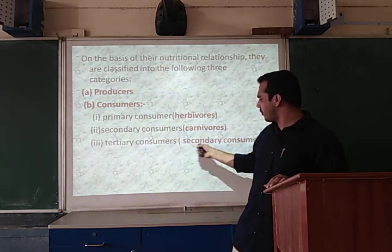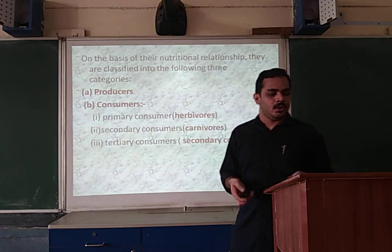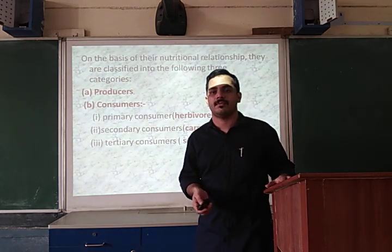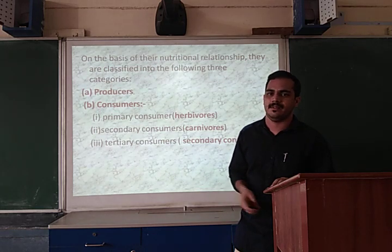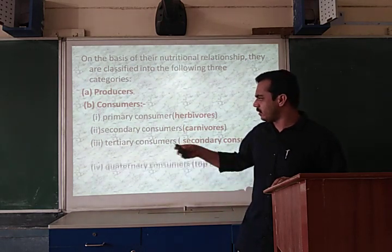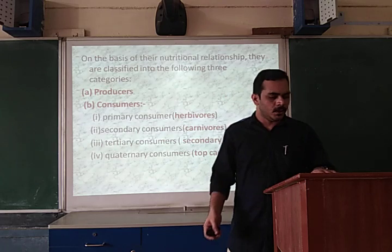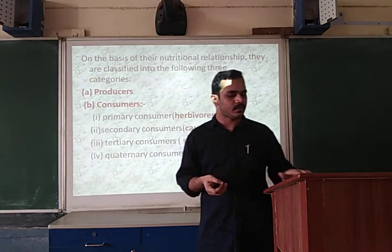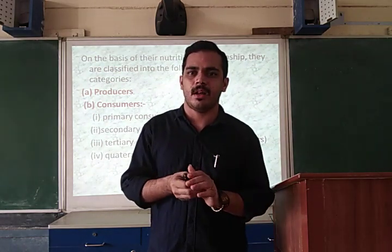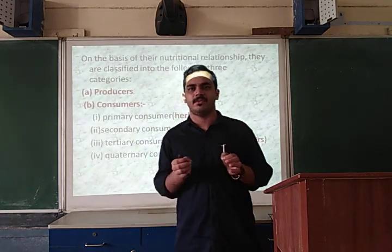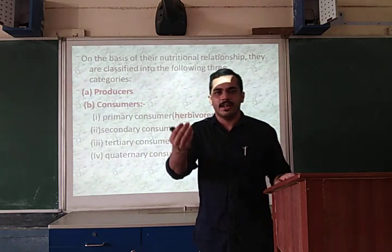The third type is tertiary consumers. Tertiary consumers are those animals which feed on carnivores for their food. The fourth type is called top carnivores. Top carnivores are those animals which are not killed and eaten by any other animal. For example, lion, eagle, and peacock — this type of organism is not killed by any other animal. They also depend on dead animals for their food.